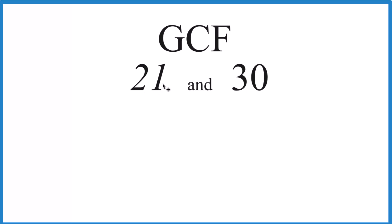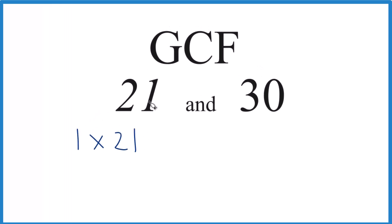For 21, we want to write the factors that go evenly into 21. So 1 times 21 equals 21, and 3 times 7, that's 21. That's it though.